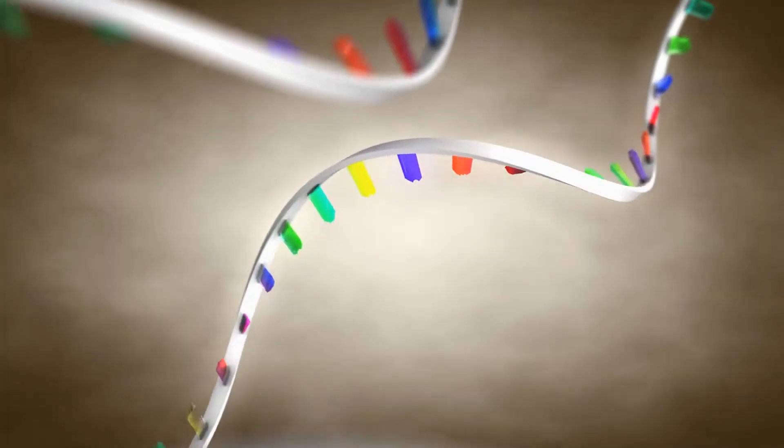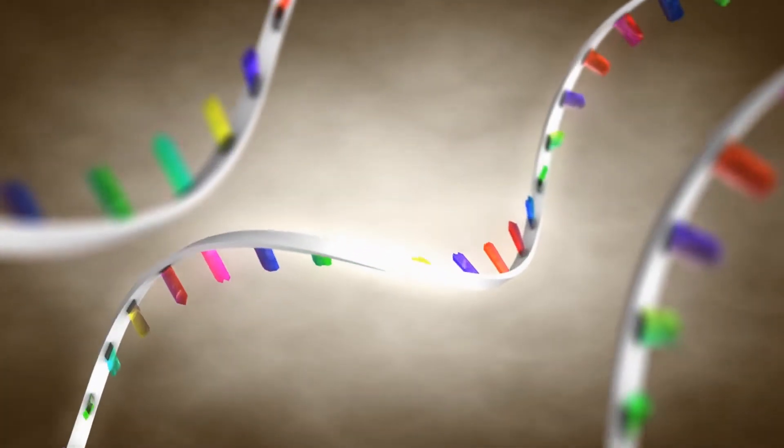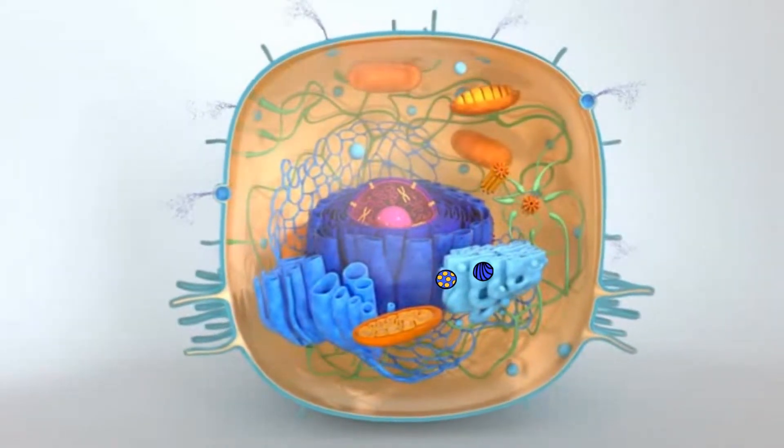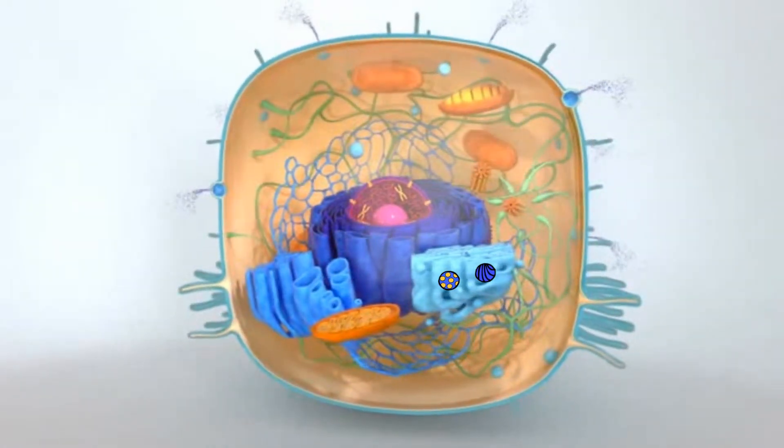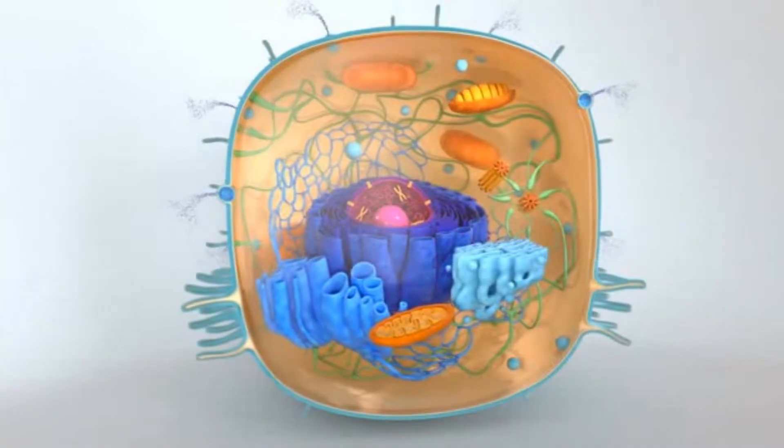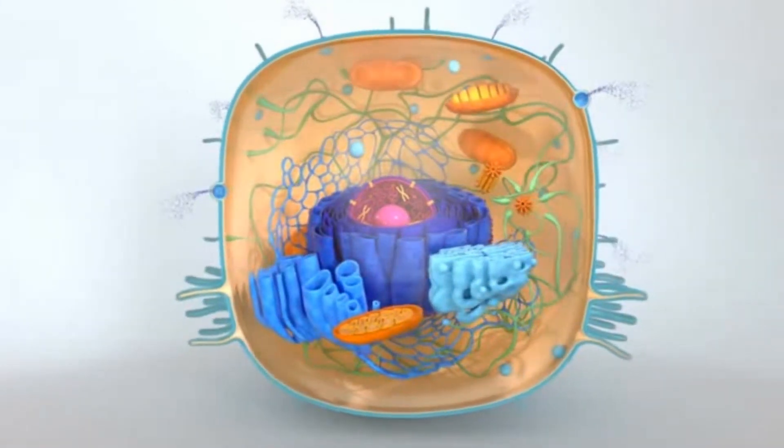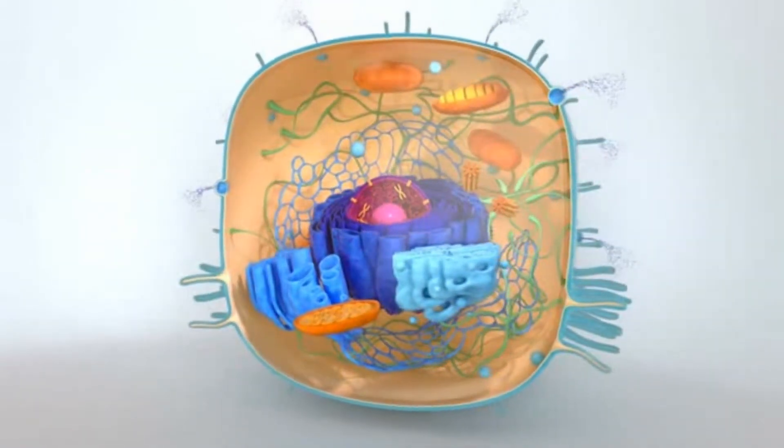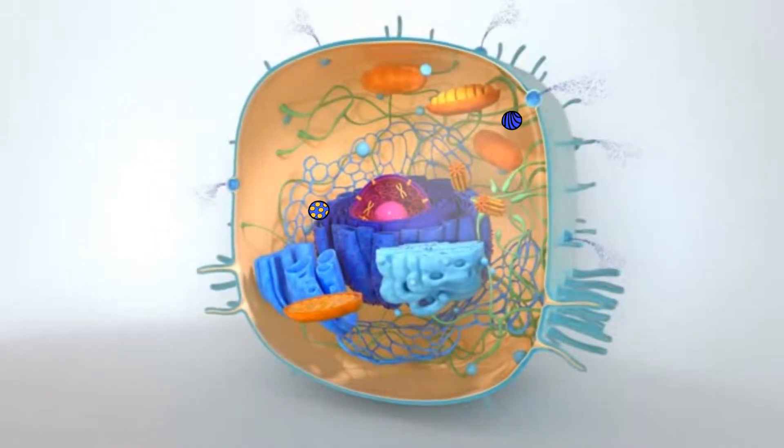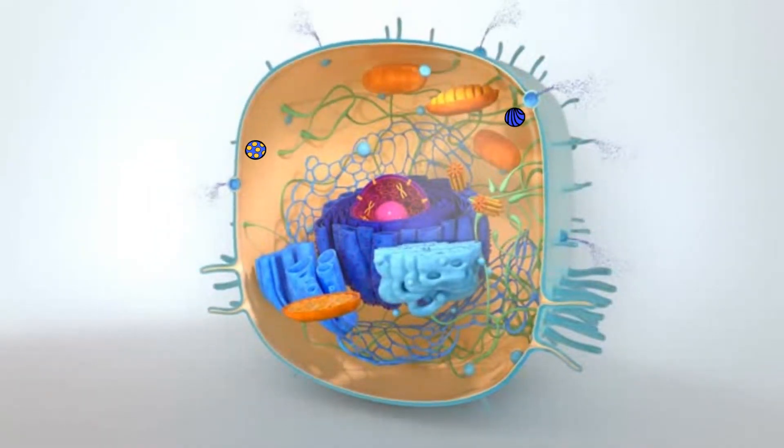The rough ER produces proteins. Some of these proteins will be transported from the ER to the Golgi apparatus. Other proteins will cross the ER to other parts of the cell or will be packaged in small sacs called vesicles, which will pinch off and travel throughout the cell.